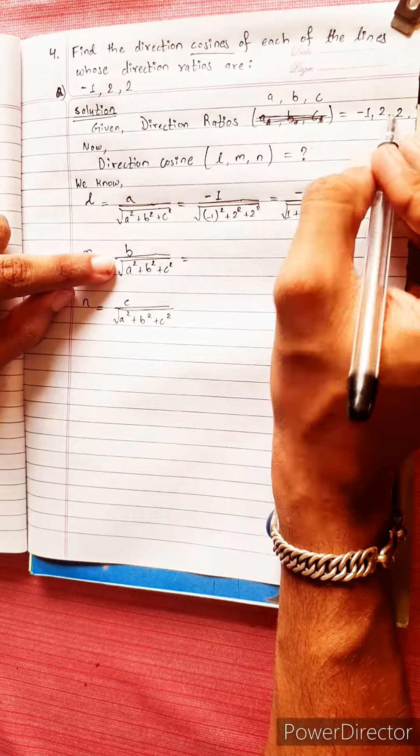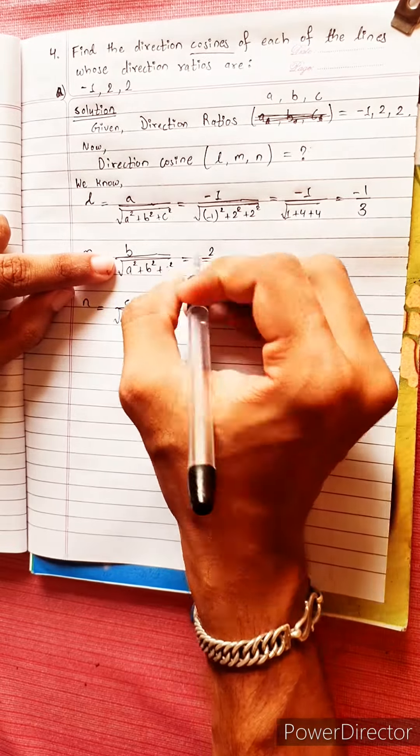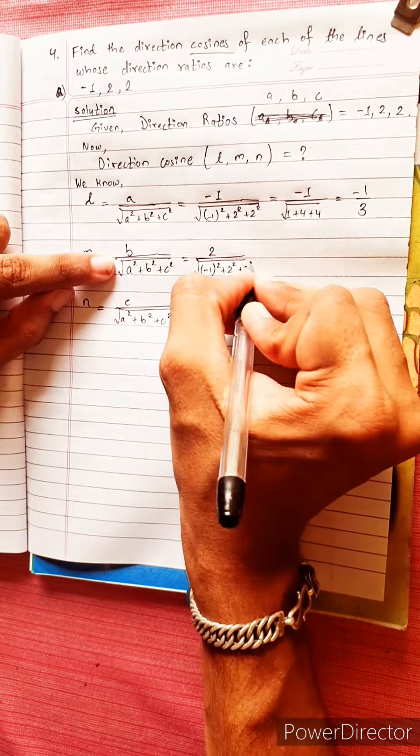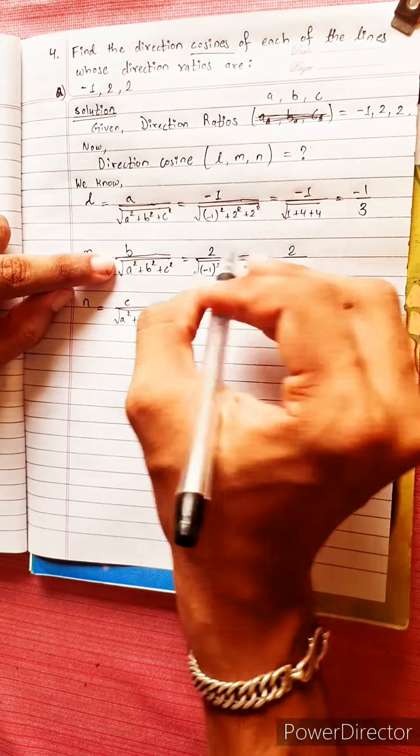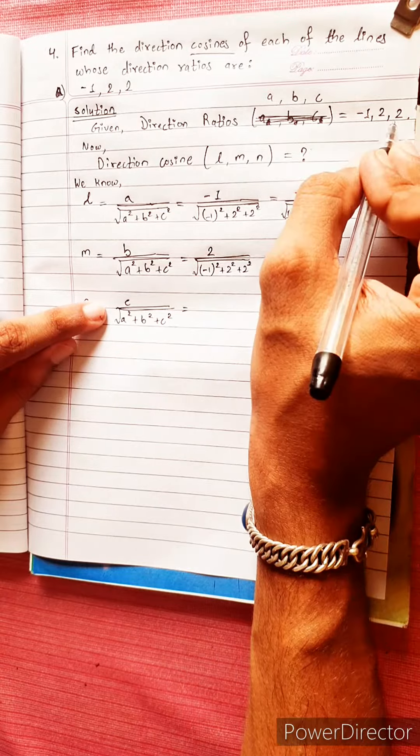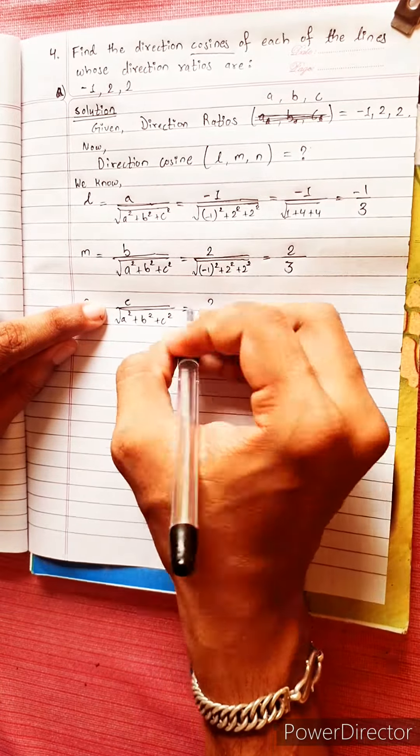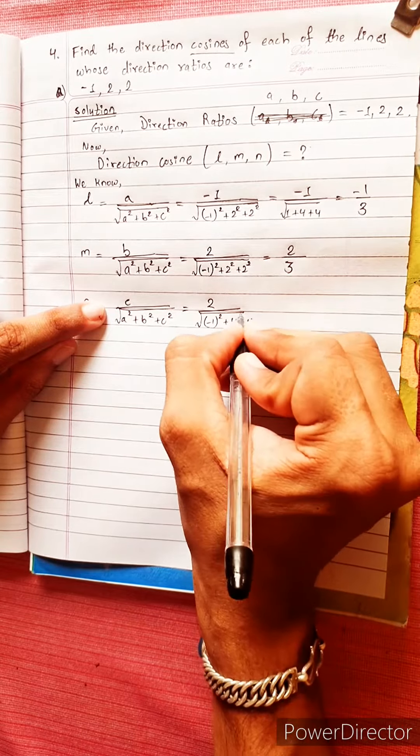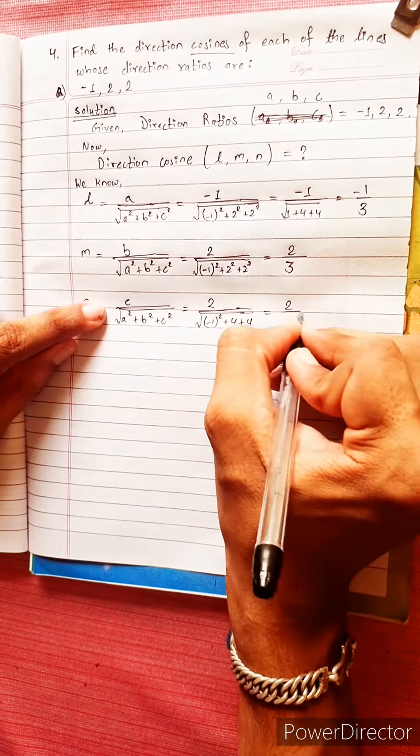Equals to, b is 2, 2 divided by, c divided by, minus 1 square plus 2 square plus 2 square, 2 divided by, c divided by, minus 1 square plus 4 plus 4, equals to 2 by 3.